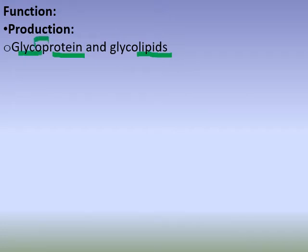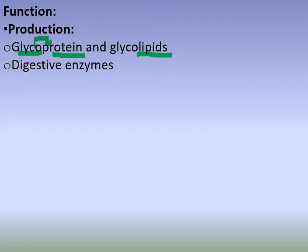The Golgi Complex performs some modifications — that is, changes. Some changes are made to proteins. Modification of proteins is an important function. Modification of lipids also occurs. Sometimes, digestive enzymes are processed here.